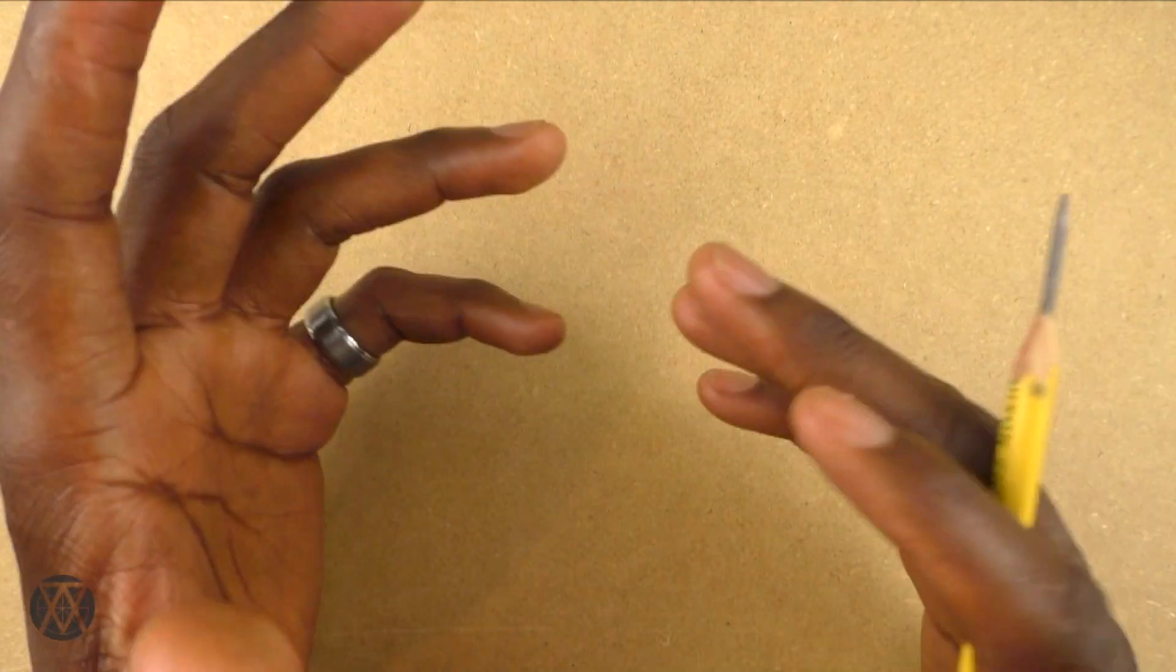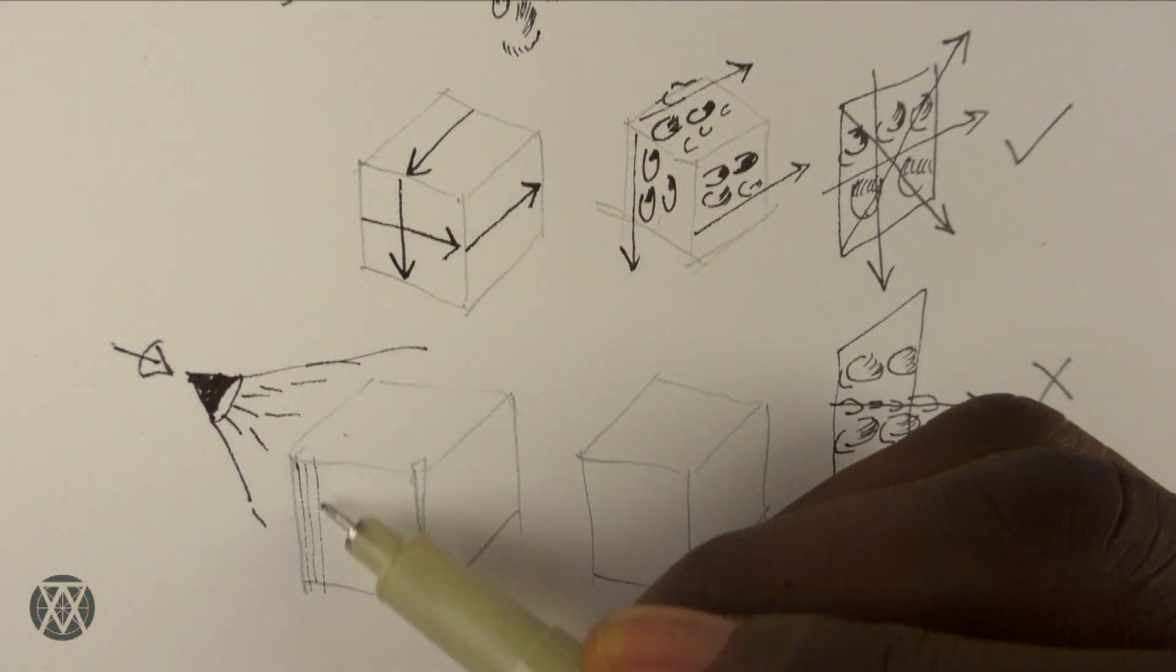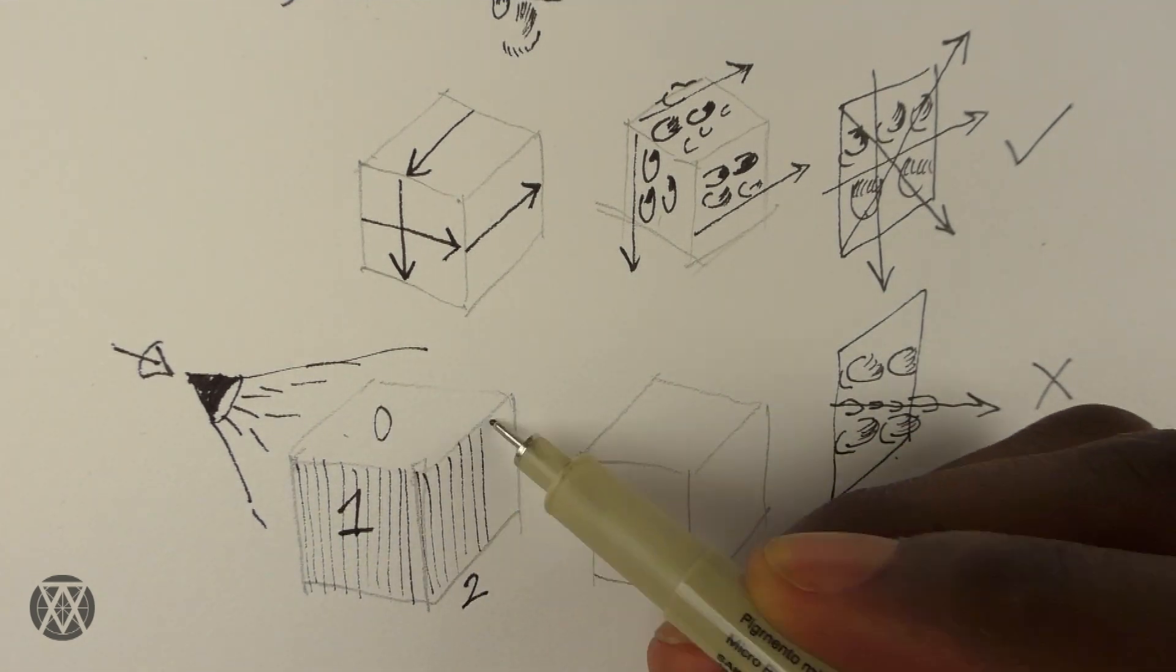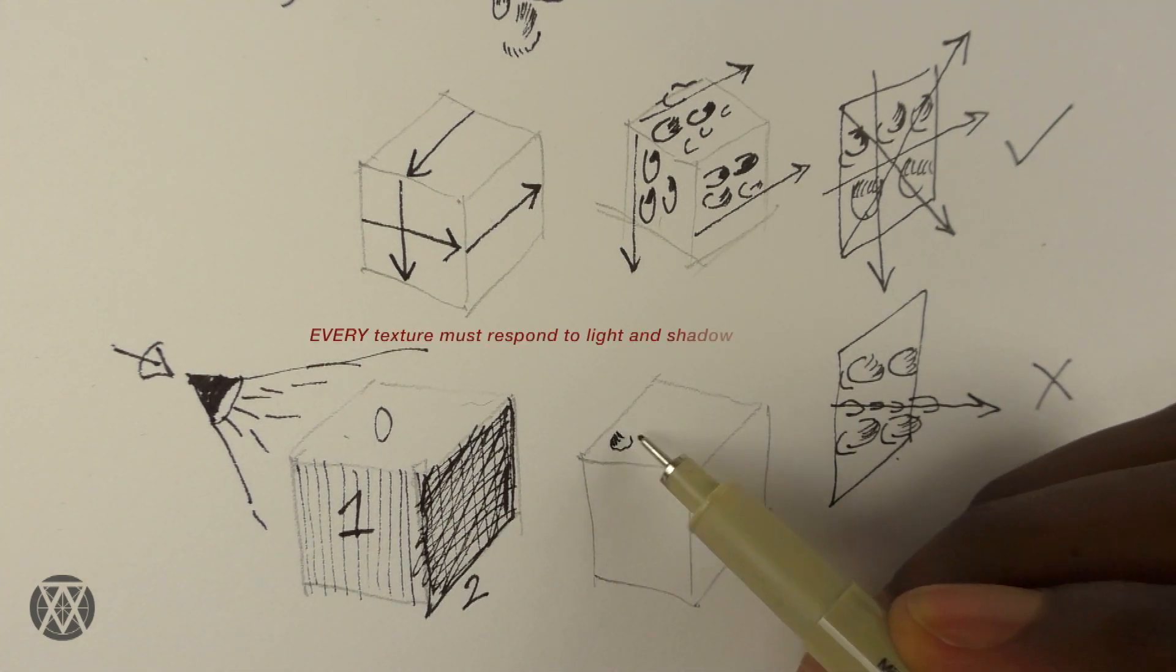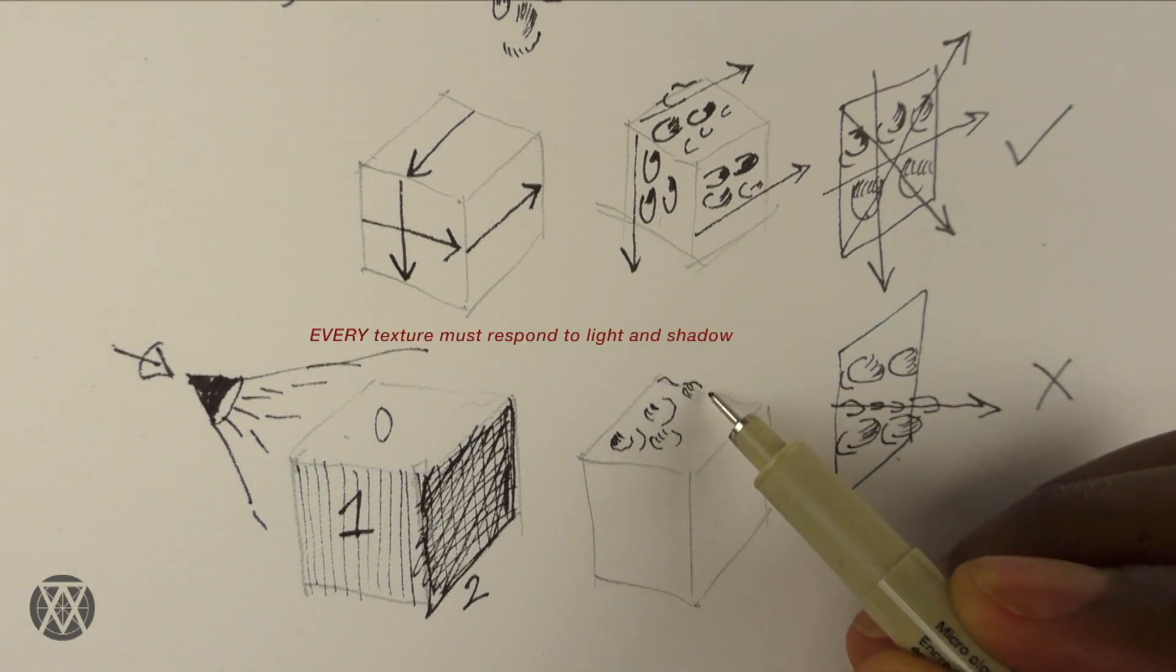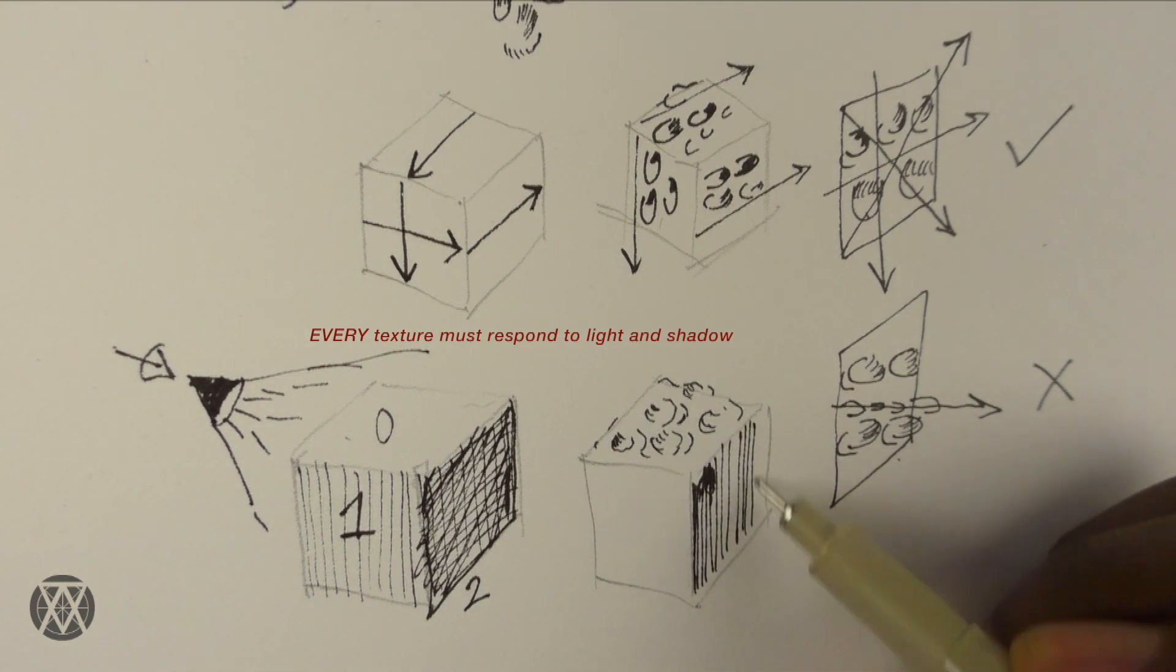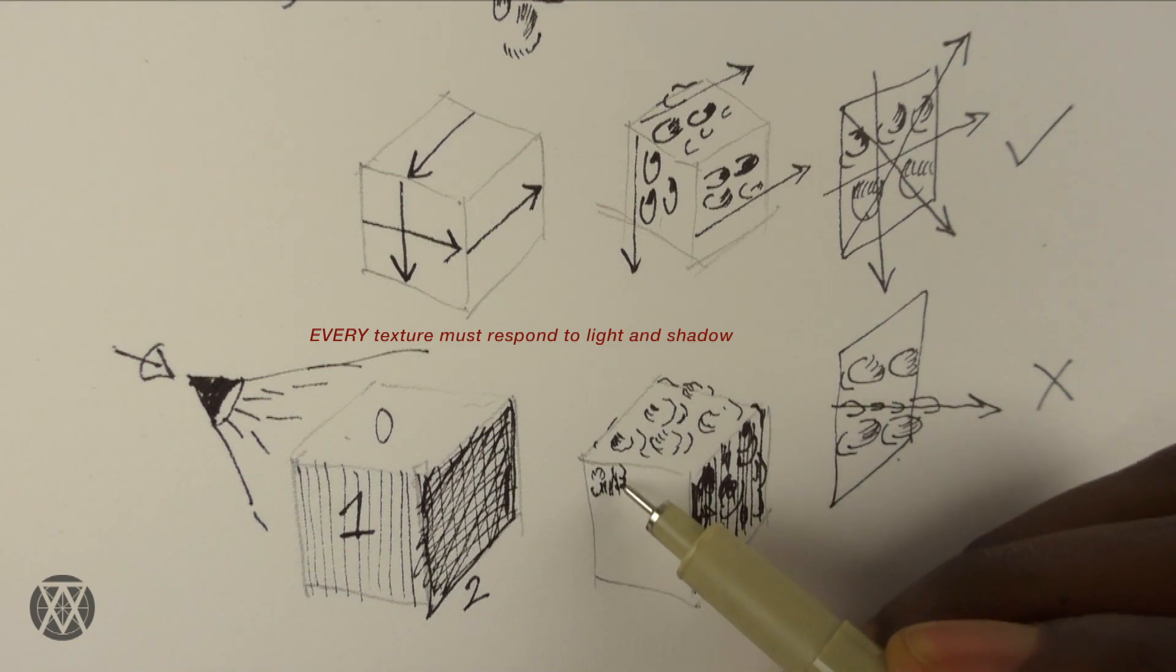Now the same way texture follows form, texture also follows light and shadow. So essentially in areas of light, the texture should appear lighter, and in areas of shadow, the texture should appear deeper. This is what really gives it that captivating level of realism.